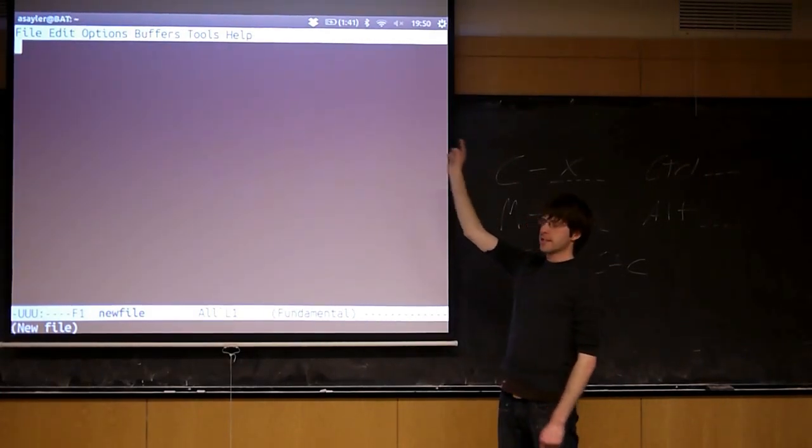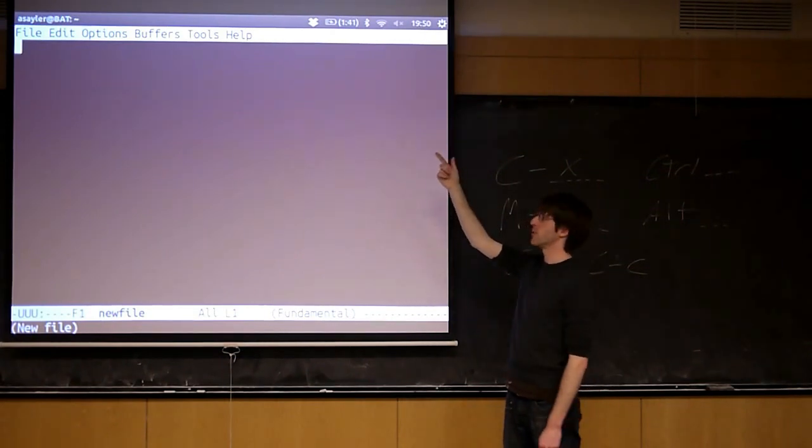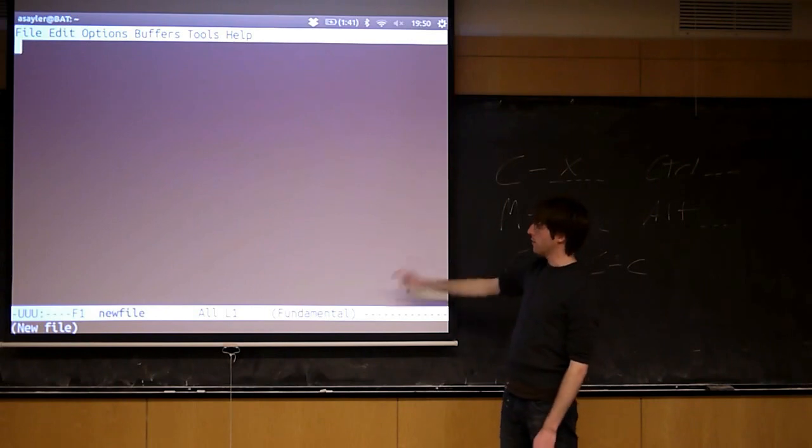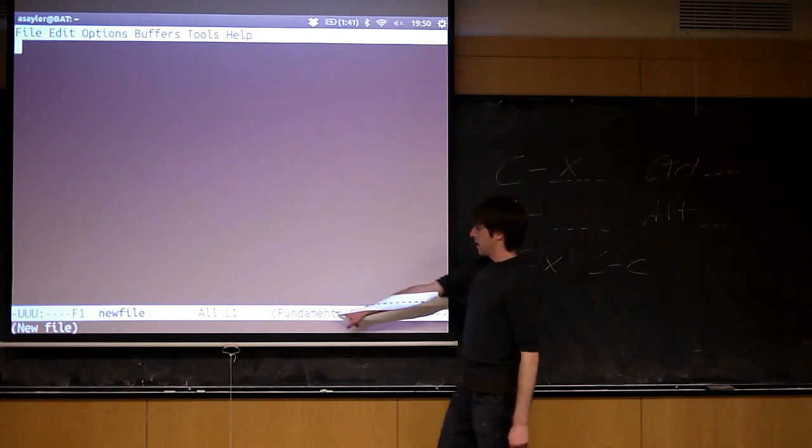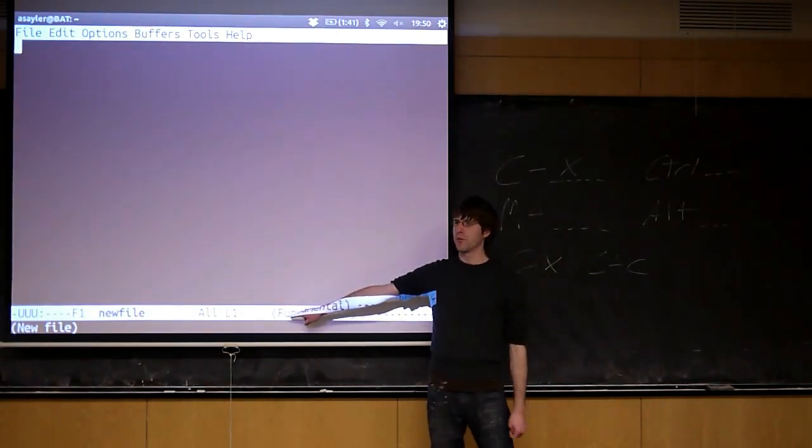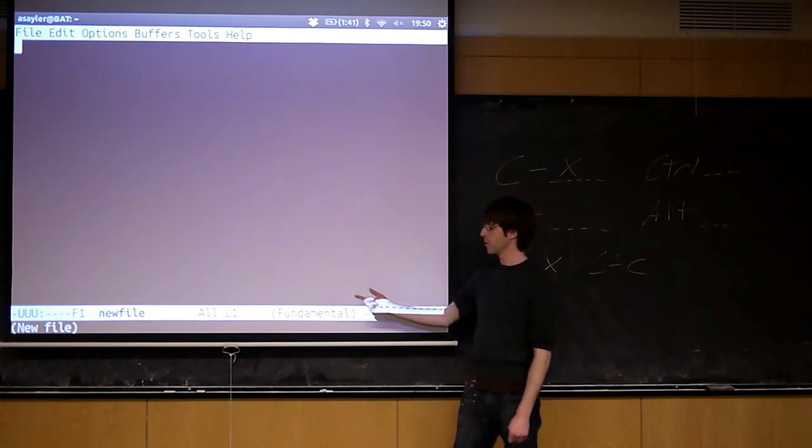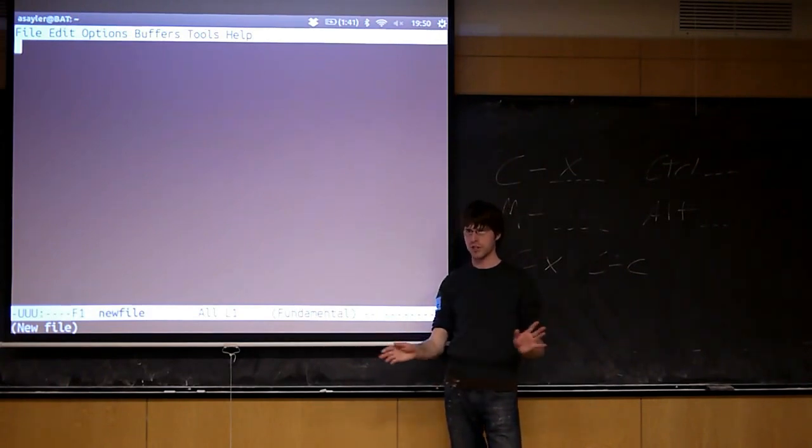The stuff along the top of Emacs doesn't tend to be very helpful. I'm not even sure why it's there because you can't click on it. The stuff on the bottom, on the other hand, this is the Emacs status bar. This tends to be pretty helpful. In parentheses here, you'll always have what's called the Emacs mode. Fundamental is just the default mode. Emacs is capable of doing syntax highlighting, automatic spacing for different programming languages, and all kinds of things like that.